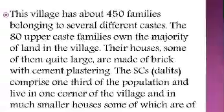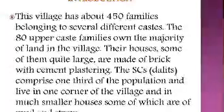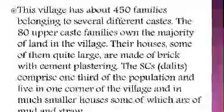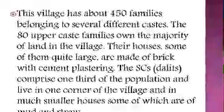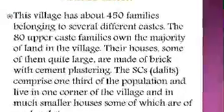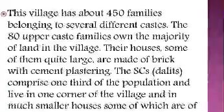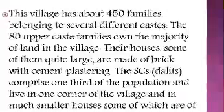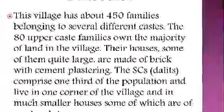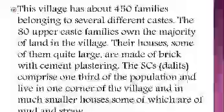Listen to the description about this village Palampur. It is having about 450 families belonging to different castes. About 80% of the families belong to the upper castes — they have their own land and their houses are quite large, made of bricks and cement. The scheduled castes, that is the Dalits, comprise only one-third of the population. Their houses are made of mud and straw, or we can say they live in kaccha houses.